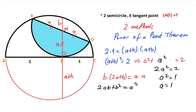That means a equals 1 unit, so the diameter of the blue semicircle is going to be 2 units. Thanks for watching. If you want to see more videos like this, please don't forget to like and subscribe to my channel. Take care and bye bye!